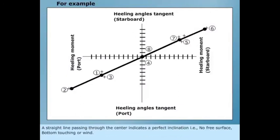A straight line passing through the centre indicates a perfect inclination, i.e. no free surface, bottom touching or wind.